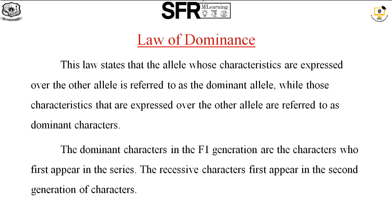Now, just taking one character — the tall and dwarf is one character. The tall plant is the dominant one and the dwarf is the recessive one. When we breed the two pure breeding plants — the tall plant with the dwarf plant — in the F1 generation, the dominant character is expressed. When two pure breeding plants are bred, the dominant character is expressed and the recessive character is suppressed. That is the law of dominance.